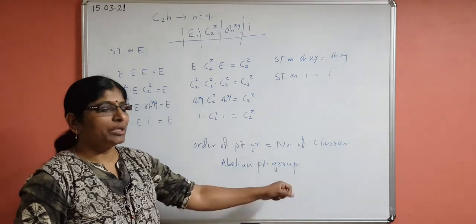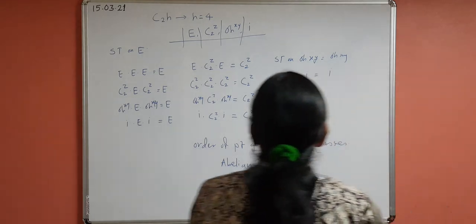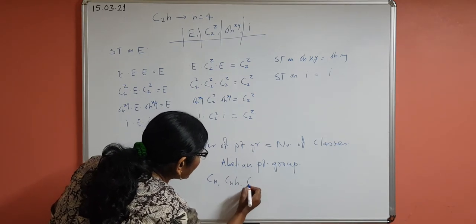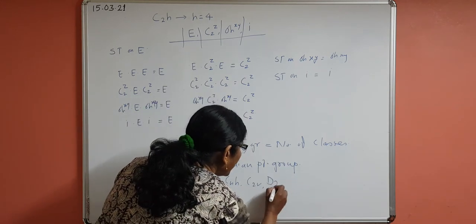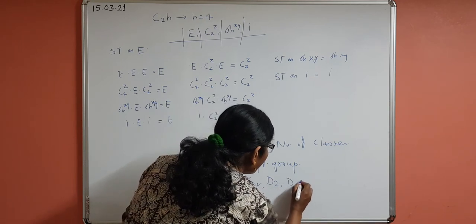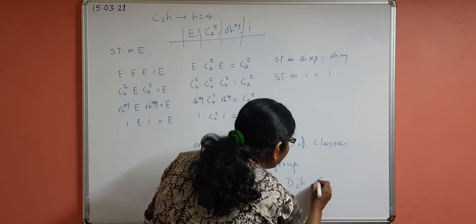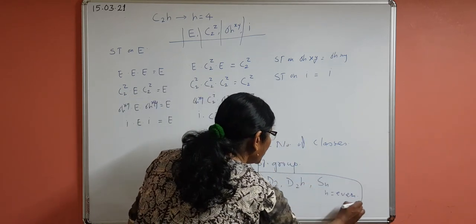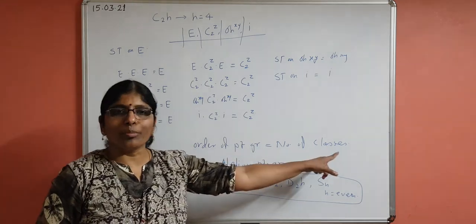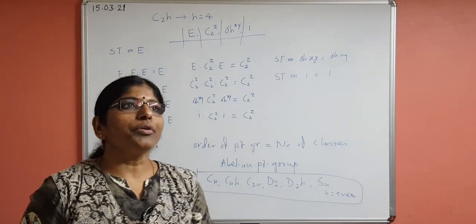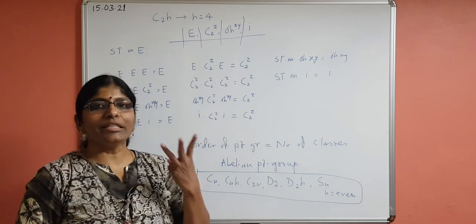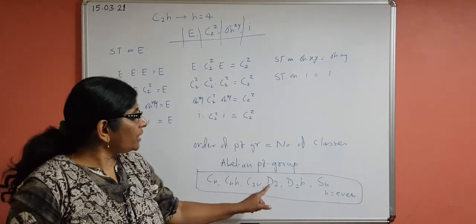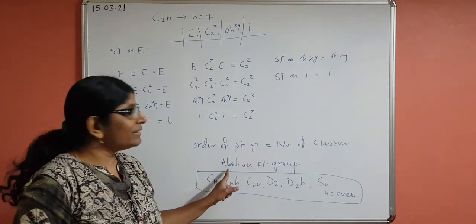Examples of Abelian point groups include: all Cn point groups, all CnH point groups, C2V, D2, D2H, and Sn when n is even. In all these, the order of the point group equals the number of classes. In contrast, C3V has order 6 but only 3 classes, making it non-Abelian. All the listed groups are Abelian point groups.